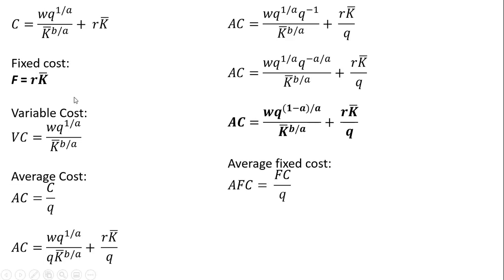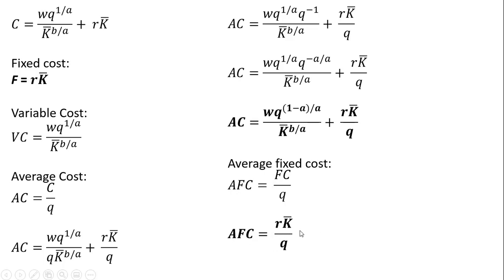Average fixed cost: we take our fixed cost and divide it through by Q. You'll also notice average fixed cost appears in the average cost equation, since average cost is nothing more than average variable cost plus average fixed cost. That is our average fixed cost.